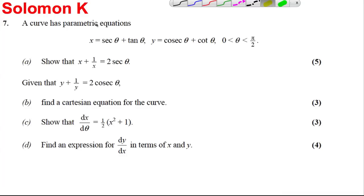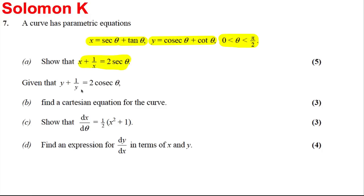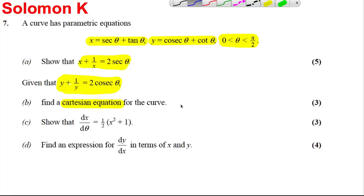Our last parametric equation question: X is sec θ plus tan θ, and Y is cosec θ plus cot θ, with θ between 0 and π/2. We need to show that X plus 1 over X is 2 sec θ, then using the given fact that Y plus 1 over Y is 2 cosec θ, find the Cartesian equation of the curve. Then show that dx/dθ is as given, and find dy/dx.